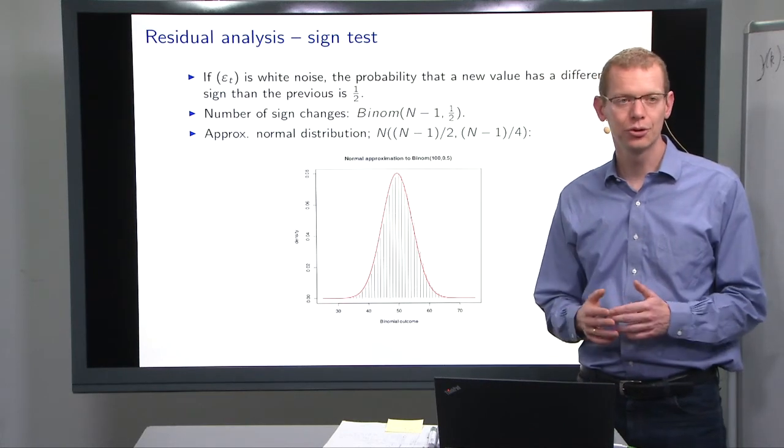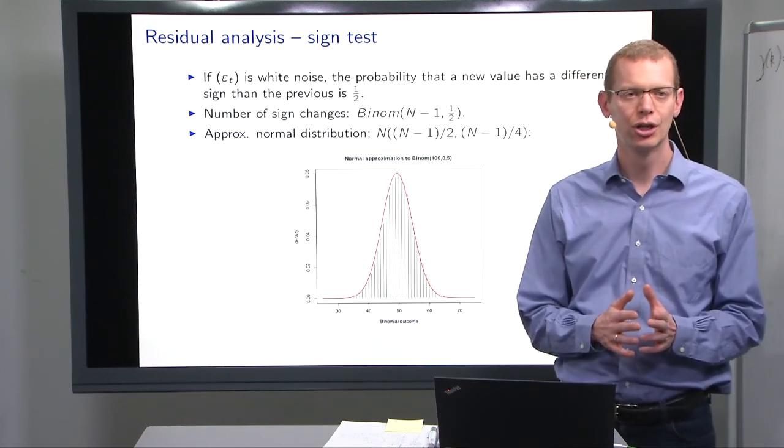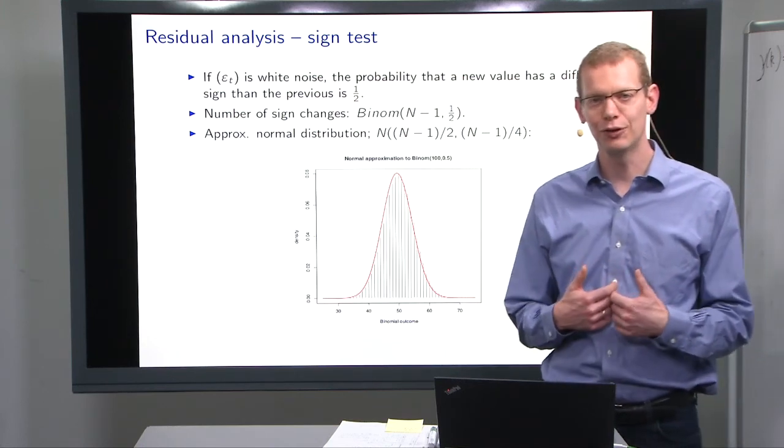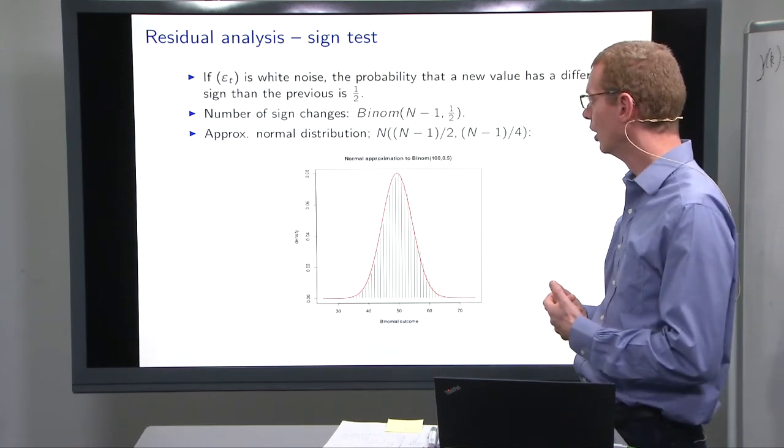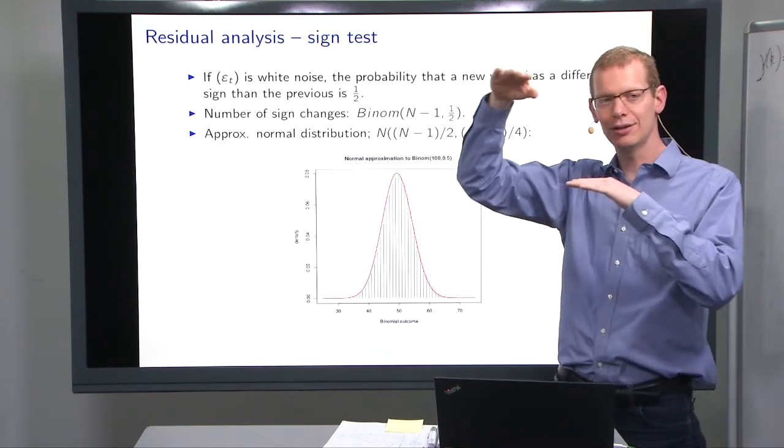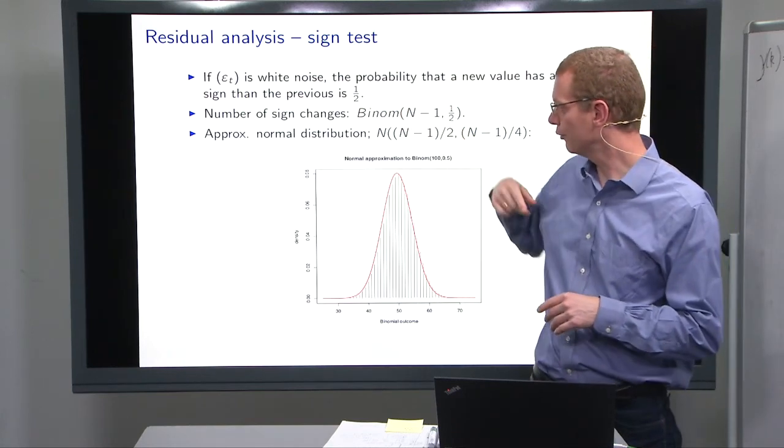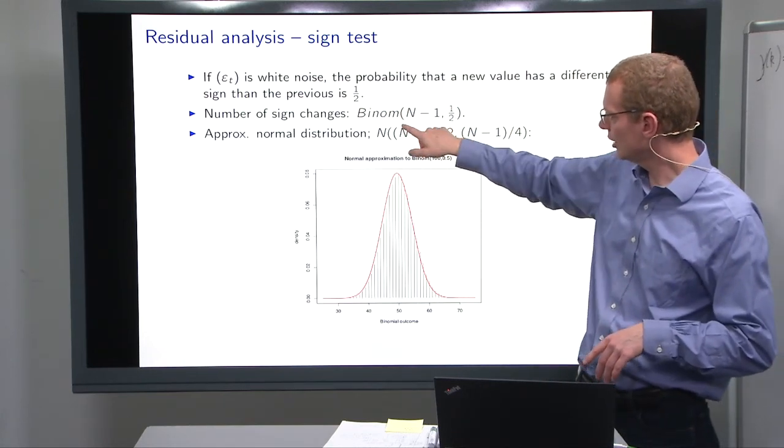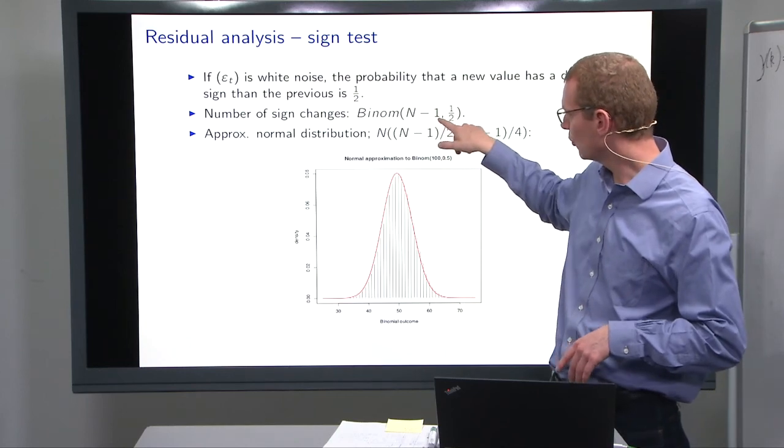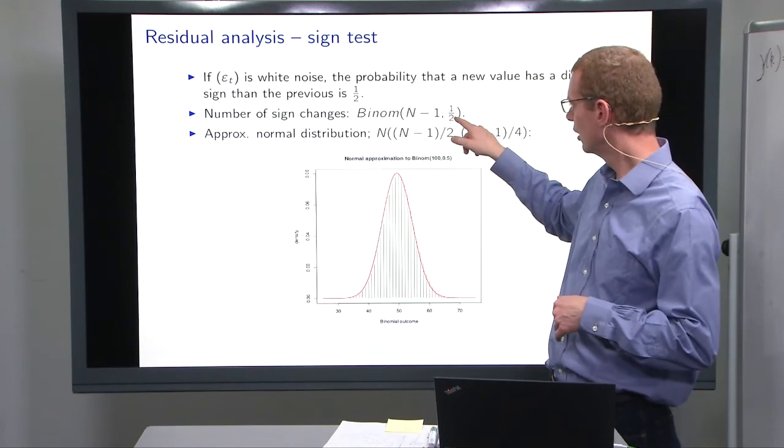So one thing is the so-called sign test, because I like to first look at data, look at the residuals, but you should also do some statistical testing to validate that your gut feeling is actually holding true. So if epsilon_t is white noise, then every other residual would change sign. That means it will change sign with probability 0.5, and the number of sign changes is n-1, following a binomial distribution with n-1 observations and probability 0.5.